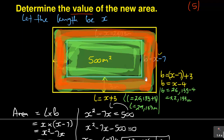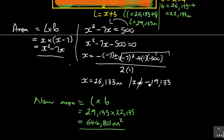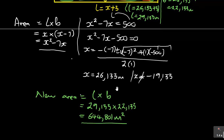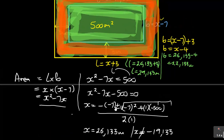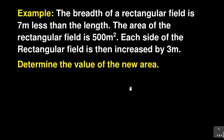I totally missed something — it is very obvious once you look at it. Maybe some of you already picked up the error. Let me go through it again, this time taking note of where the error was made. The breadth of a rectangular field is seven meters less than the length; the area is 500 square meters; each side is increased by three meters — determine the value of the new area.